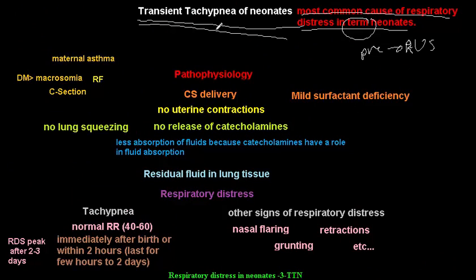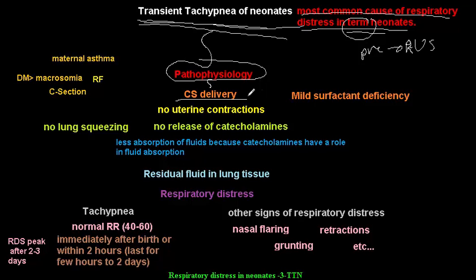Let's start with the pathophysiology. What really happens in transient tachypnea of neonates is that it occurs most in term babies delivered by elective caesarean section. The result of elective caesarean section delivery is that we have no uterine contractions. Usually uterine contractions lead to catecholamine release, so if we have no uterine contractions we will have no catecholamine release. One of the functions of catecholamines is to absorb fluid from the lung.